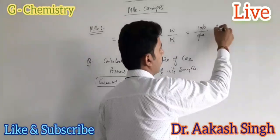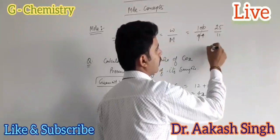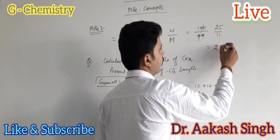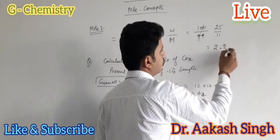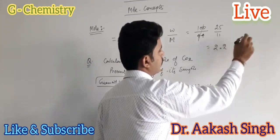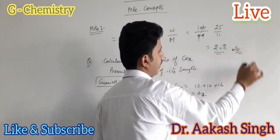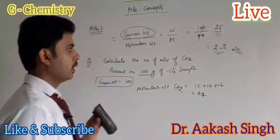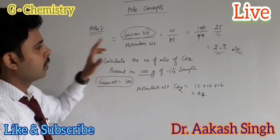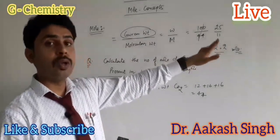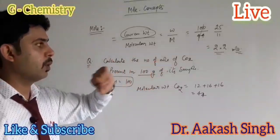This gives 25 upon 11, which is approximately 2.2 moles. This is the number of moles of CO₂ present in 100 grams of CO₂.